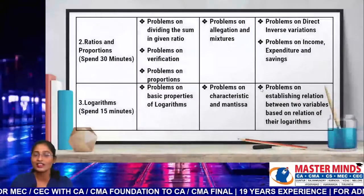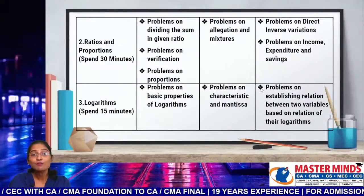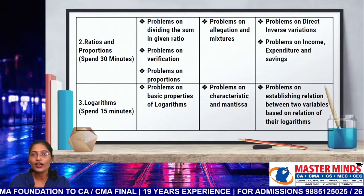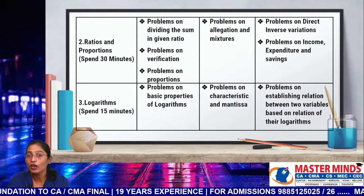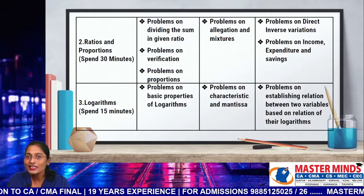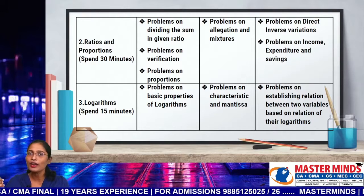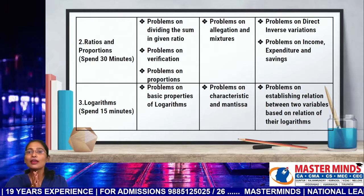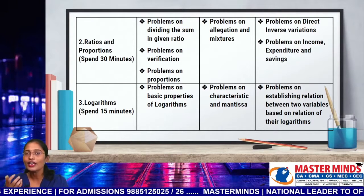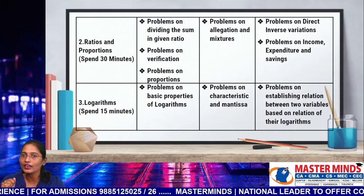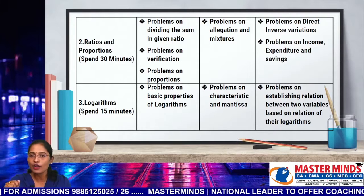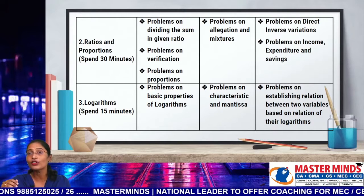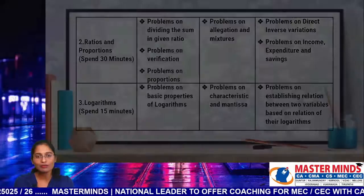The next topic to be revised is Logarithms. Try to spend 15 minutes on the logarithms topic. Highest priority models: problems based upon basic properties of logarithms — all formula-based questions of logarithms are quite important. Second priority: problems on characteristic and mantissa. Least priority: problems on establishing a relation between two variables based upon the relation of their logarithms. That's all about logarithms.